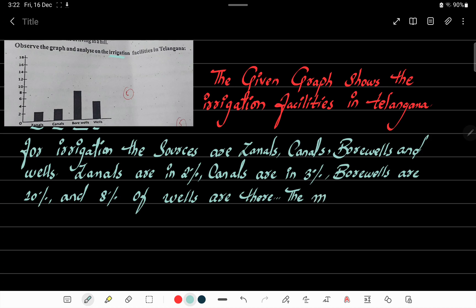The main source of irrigation is borewell, which is 10 percent.